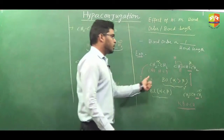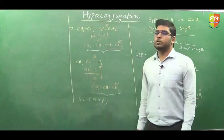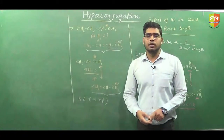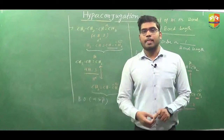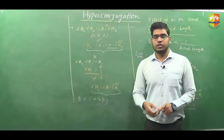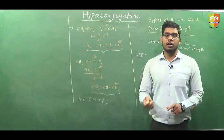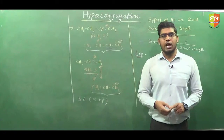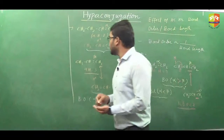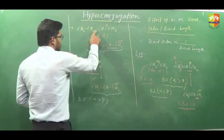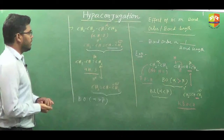If you do not have hyperconjugation, fine, but if you have hyperconjugation, then you have to check how many hyperconjugative structures we have in which carbon-carbon single bond or double bond is present. According to that you can easily decide. Suppose if you are comparing the bond order of this one and this one — these two carbon bond lengths you are comparing.